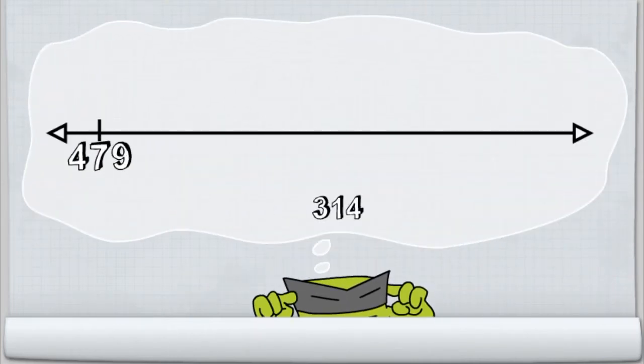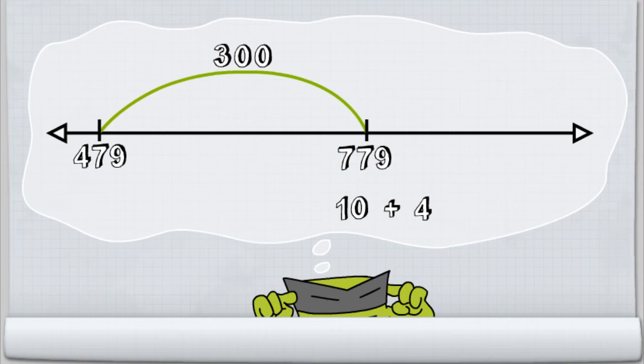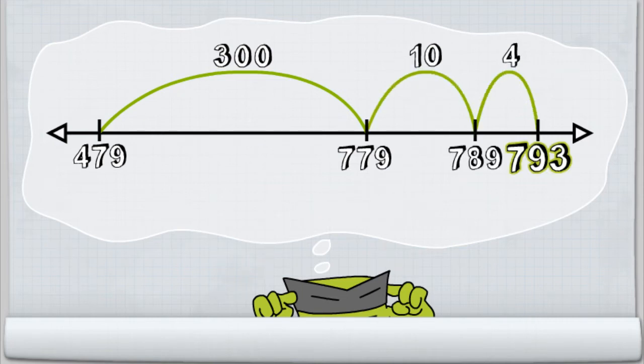Jumper starts at 479, decomposes 314, and imagines a finesse fling of 300 on the number line. He then makes a second jump of 10 and a final jump of 4 to 793!